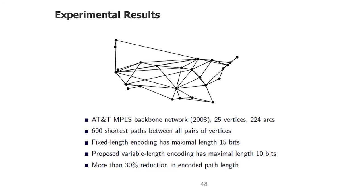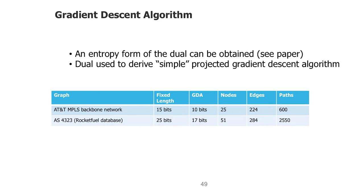We have experimental results on various networks. We looked at all-pairs shortest paths and tried to encode them. We devised a gradient descent algorithm from the entropy form of the dual. On two tested networks, using fixed-length encodings would require 15 and 25 bits. With this gradient descent satisfying all Kraft's inequalities, we reduce that by about 30%.